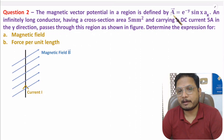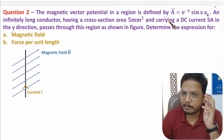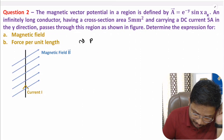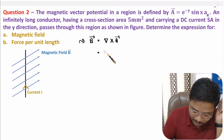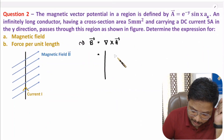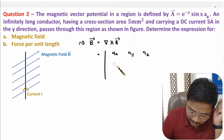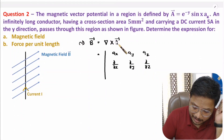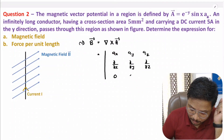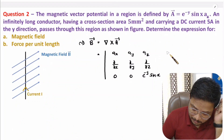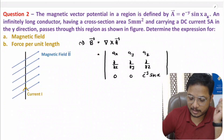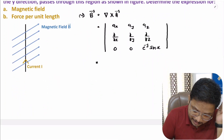From the vector magnetic potential we can find the magnetic field. Magnetic field B equals del cross A. For Cartesian coordinates, the curl is set up as a determinant with rows â_x, â_y, â_z; then ∂/∂x, ∂/∂y, ∂/∂z; and the components of A. Here vector A has only an â_z component, so the x and y components are zero and the z component is e^(−y) sin(x).